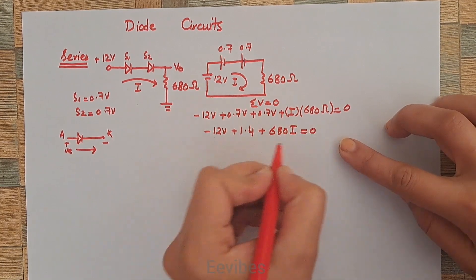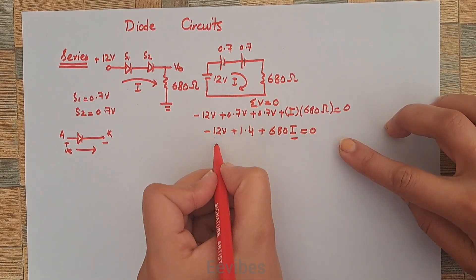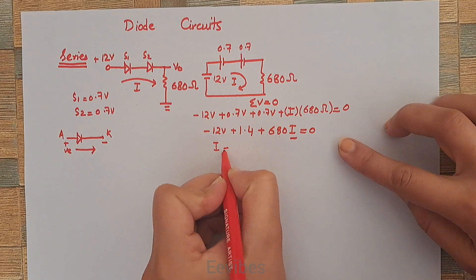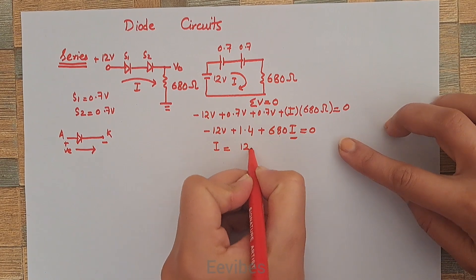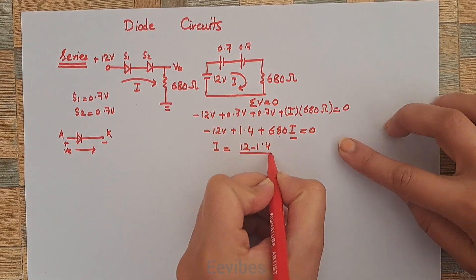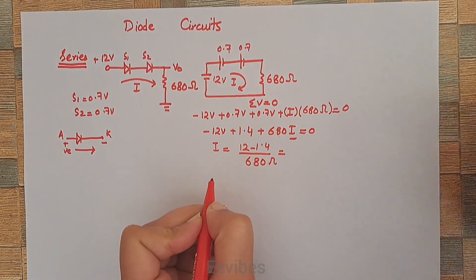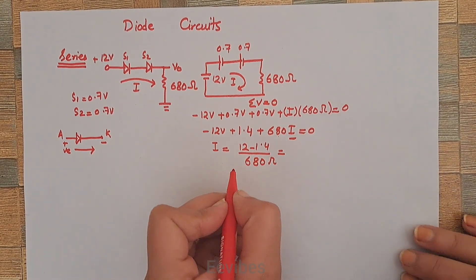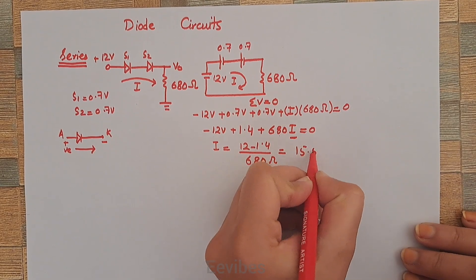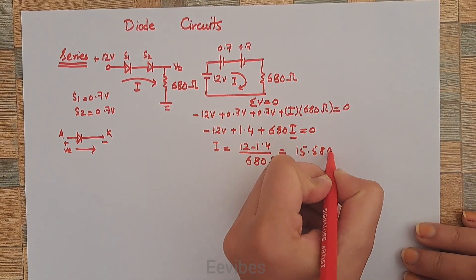From here we can determine the value of I. The current will be equal to (12 - 1.4) / 680Ω, which equals 15.58 milliamperes. This is the current flowing in this particular circuitry.